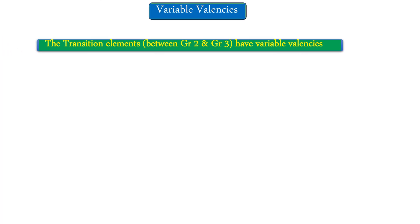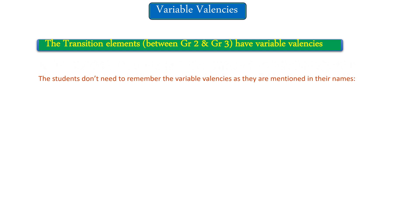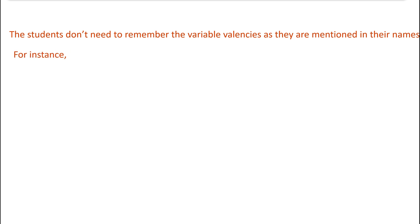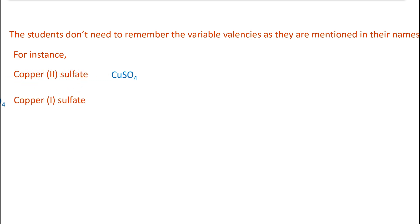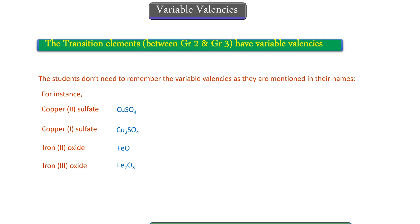Now, variable valencies. Some elements — called transition elements, found between group two and group three in the main block periodic table — have variable valencies. You are lucky that you don't need to memorize them because they are always given with their names. For instance, copper(II) sulfate has the number two given because that is its oxidation number or valency. Copper(I) sulfate has valency one. Similarly, you may get iron(II) oxide or iron(III) oxide. This is how their valencies are always given with their names.